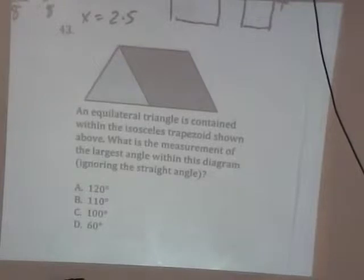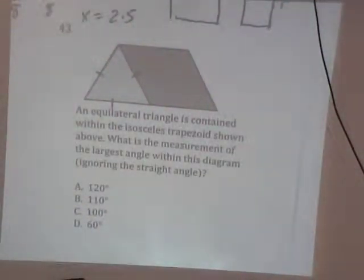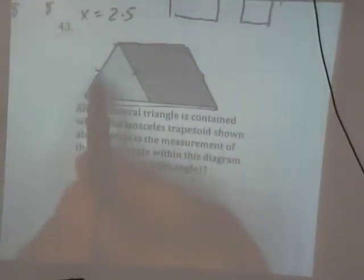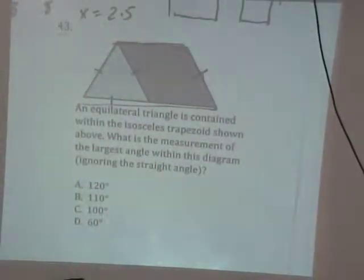Alright. The next one, an equilateral triangle is contained within the isosceles trapezoid shown. An equilateral triangle, what does that mean? All sides equal. Okay. So this equals this equals this, right? Isosceles trapezoid, what does that mean? The two legs are the same, right? Okay, so this is the trapezoid they're talking about. The whole thing is a trapezoid. So this side has to equal this side then. What is the measure of the largest angle in the diagram, ignoring the straight angle?